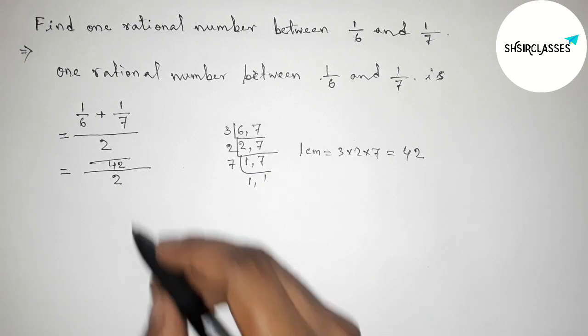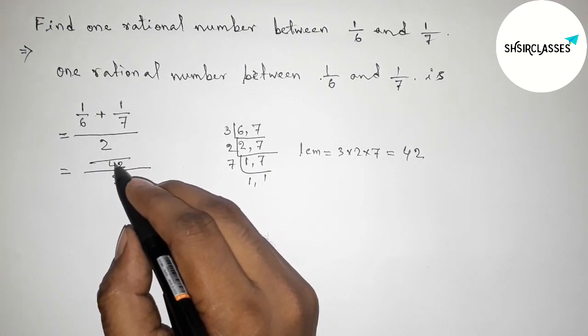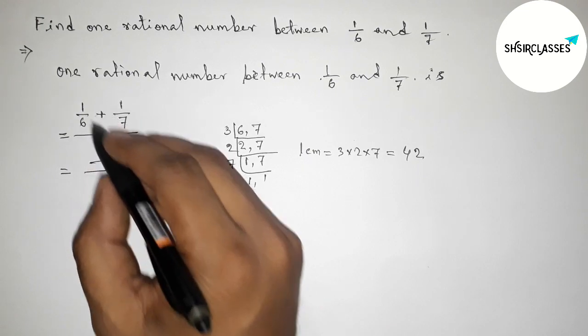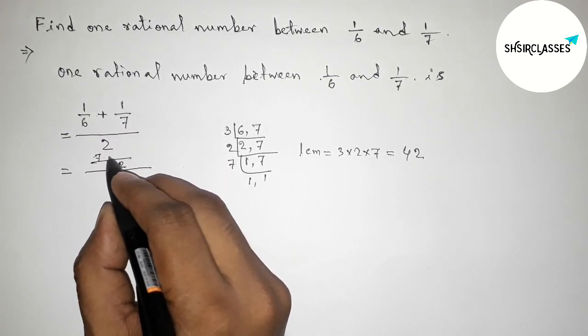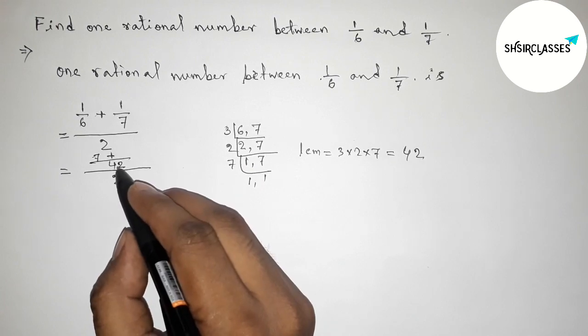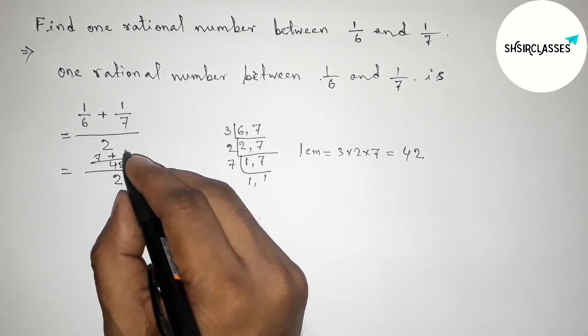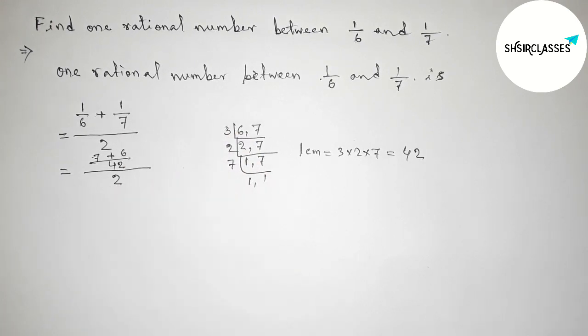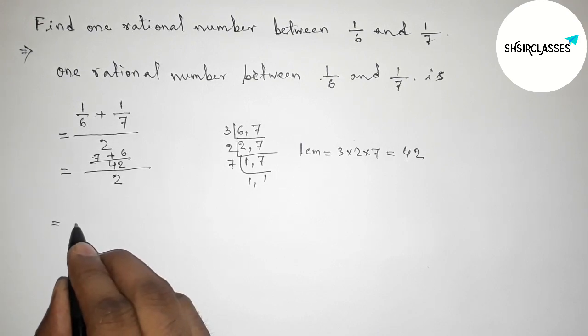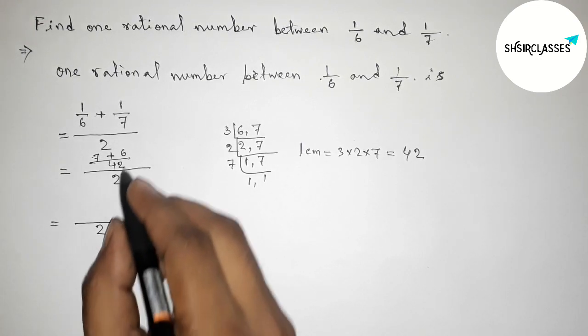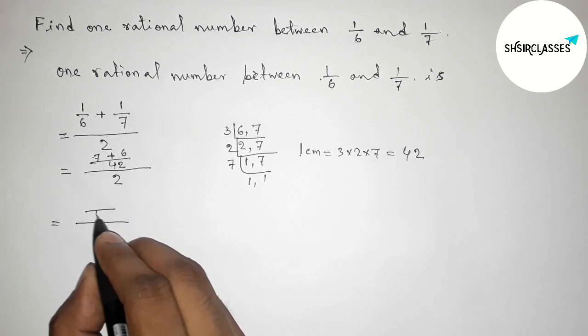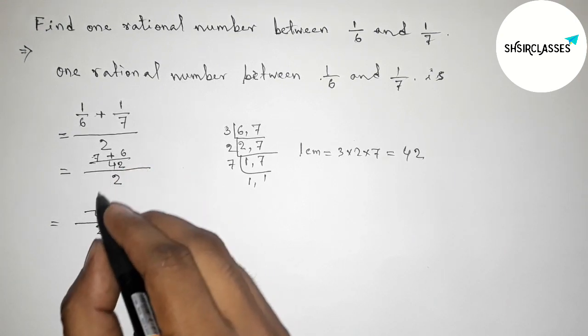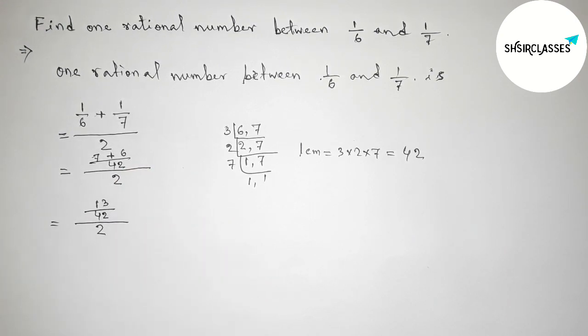42 by 6, so 6 sevens are 42 and 7 ones are 7. Similarly, plus 7/6, 6 sixes are 42 and 6 ones are 6. Okay, so now again simplifying this. So here 6 plus 7, so this is 13.